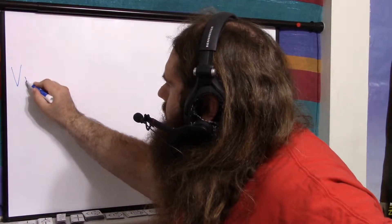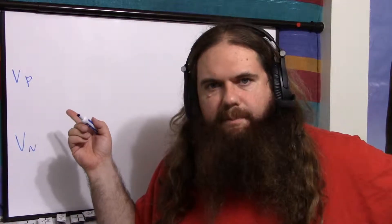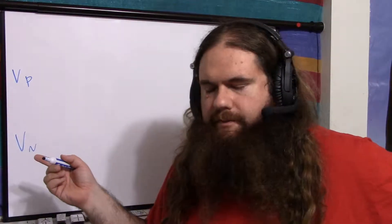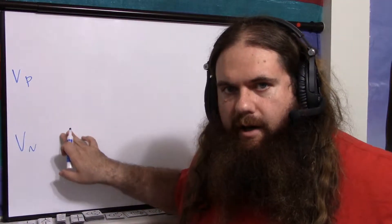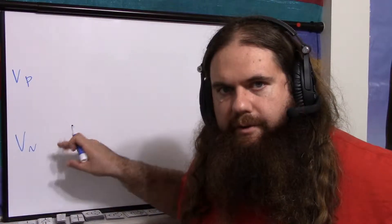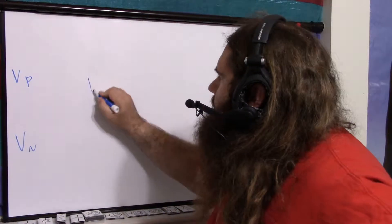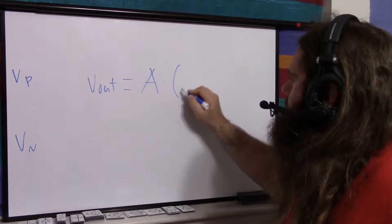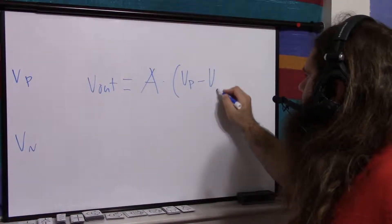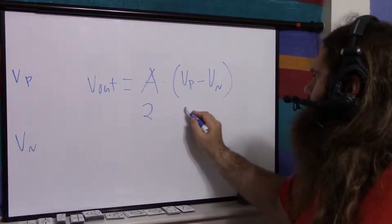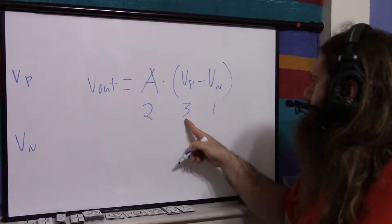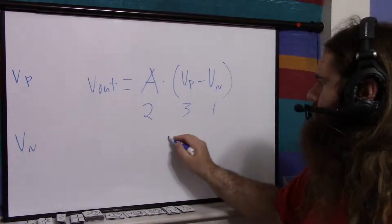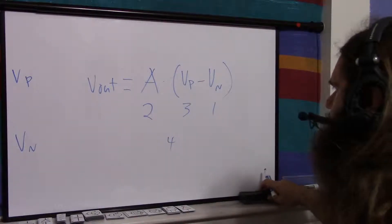Let's say we have two voltages: vp and vn — vp for positive, vn for negative. Vp goes into the non-inverting input and vn into the inverting input. We want v_out to equal some gain times (vp minus vn). So if our gain is two and vp is three and vn is one, three minus one is two, times two is four — a standard differential amplifier.